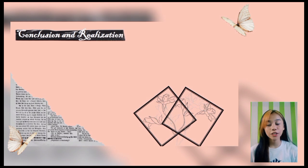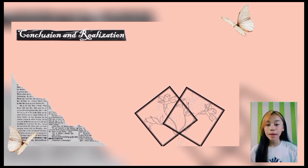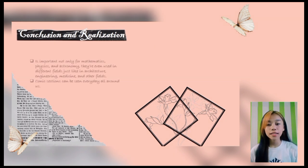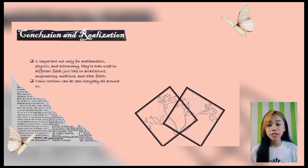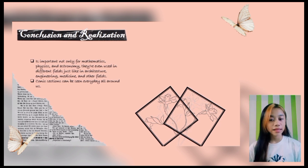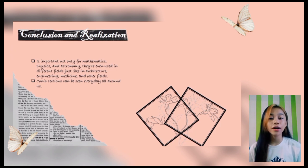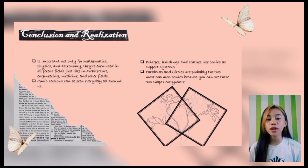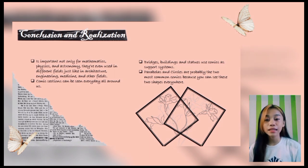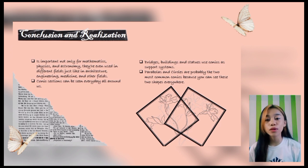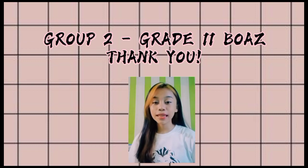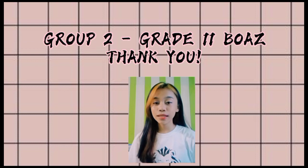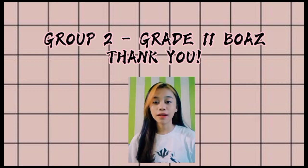In conclusion, the study of conic sections is important not only for mathematics, physics, and astronomy — they are used in different fields like architecture, engineering, medicine, and others. The application of conic sections can be seen every day all around us. Bridges, buildings, and statues use conic sections as a support system. Parabola and circle are probably the two most common conics because we can see these two shapes everywhere. That's all, and we hope you have learned something from this presentation, especially about our chosen architectural design, the Dome of the Rock. Thank you for watching.